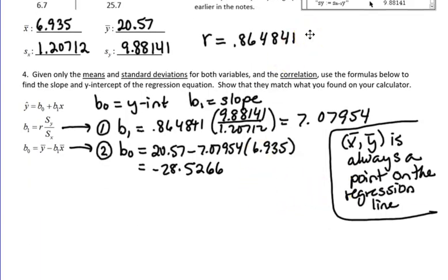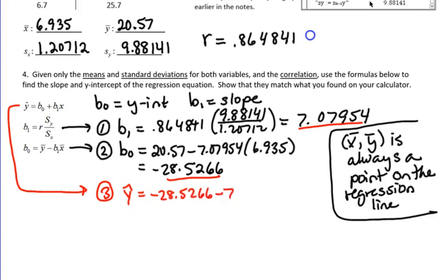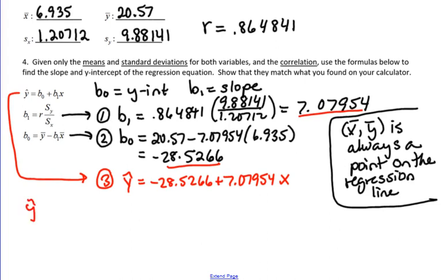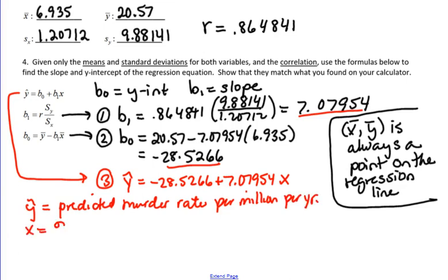So now that I know these two values, I can use my third equation and say, now I know what the equation of the regression line is. Y hat is equal to negative 28.5266 plus 7.07954 times X. And of course, I should identify my variables. Y hat is the predicted murder rate per million people per year, and X equals the percent unemployment.